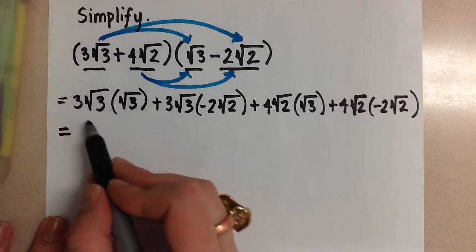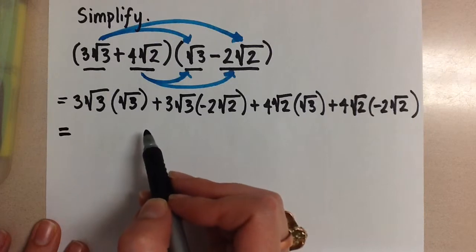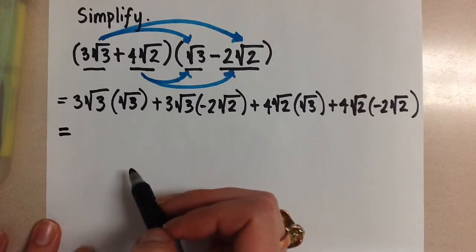Now we are going to simplify each of our new terms by multiplying the coefficients together and the radicals together.